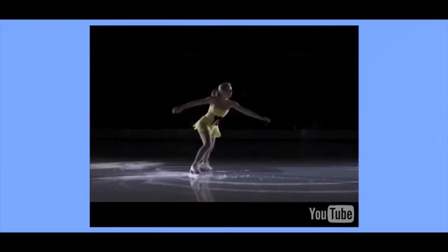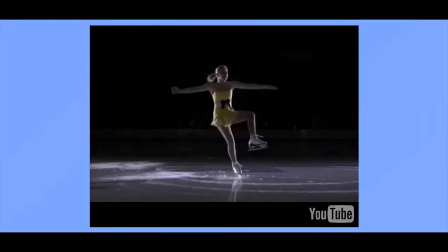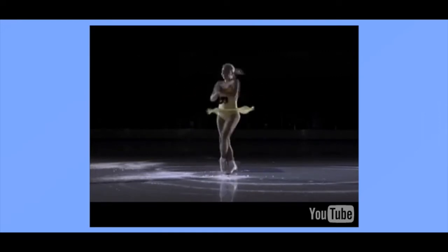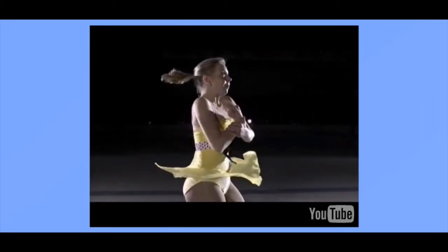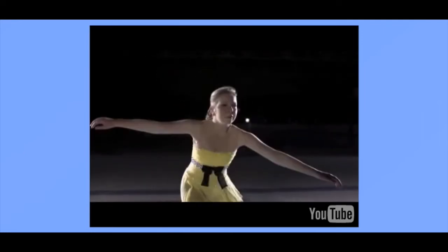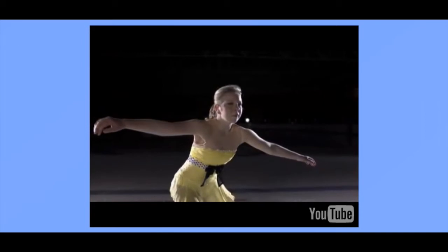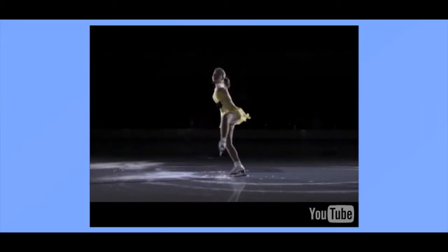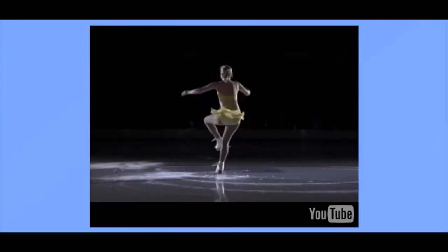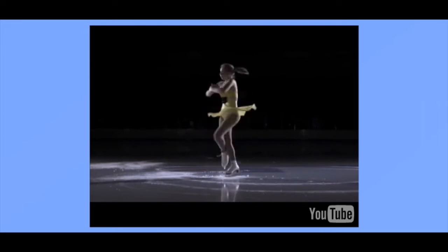When Rachel spins on the ice, she exploits a law of physics to rotate faster and faster, almost as if by magic. How does she increase her speed while she's spinning? The answer lies in her arms. When Rachel first starts to spin with her arms extended, she rotates slowly. But as she pulls her arms in closer and closer, she starts to rotate faster and faster.